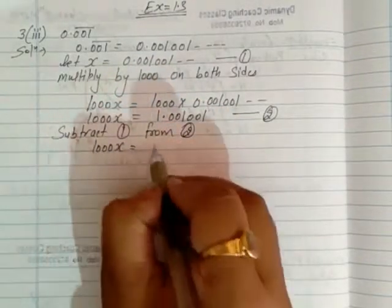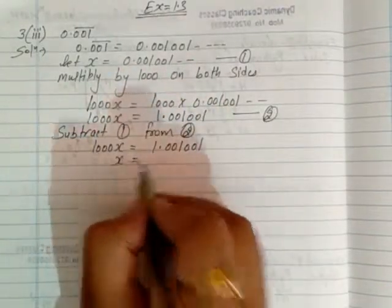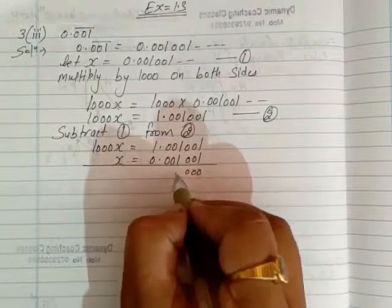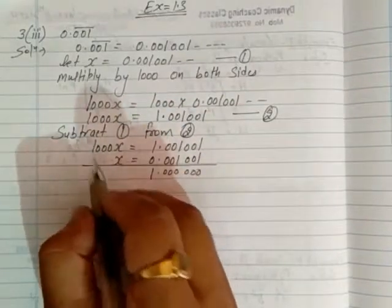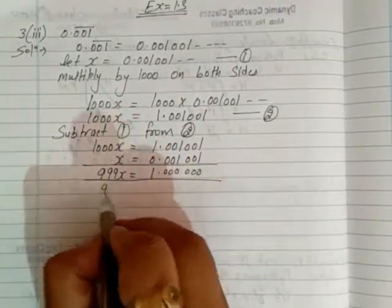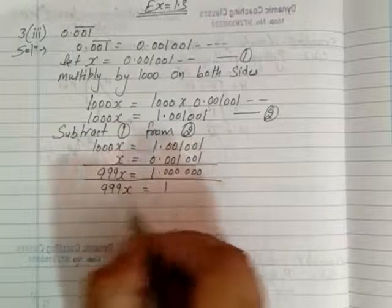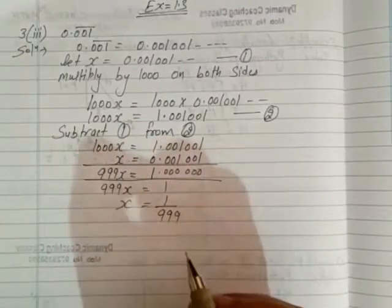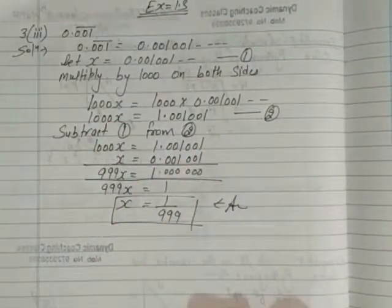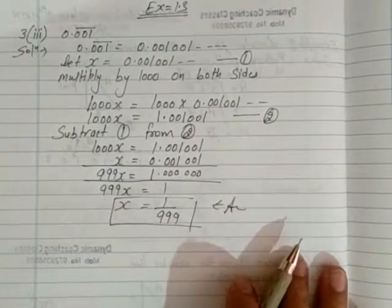Now subtract: second equation 1000x equals 1.001001... minus first equation x equals 0.001001... The repeating parts cancel out, giving 999x equals 1. So x equals 1 by 999. That is the answer. This was a very simple question. Try the similar examples in the book as well — they will be very simple. Thank you.